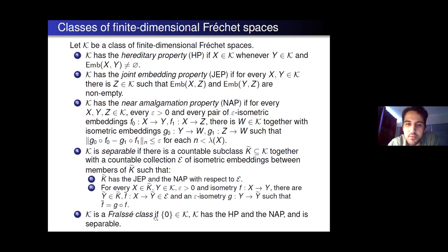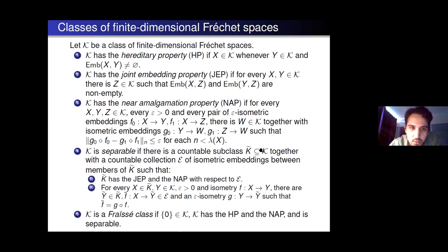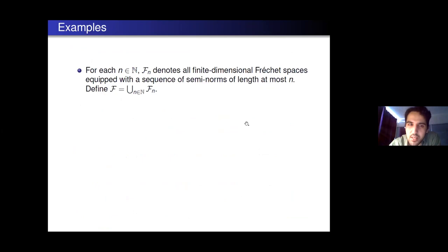K is a Fraïssé class if it includes the zero vector space, and if it has the hereditary property, the near amalgamation property, and if it's separable. These conditions are enough to build some sort of limit of these Fraïssé classes. There's a comment in the chat: 'you seem to be considering graded Fréchet spaces in the sense of Vogt.' Yes, that's exactly that.